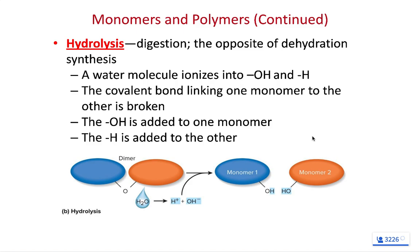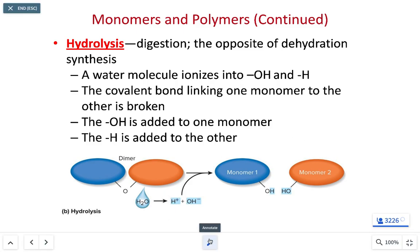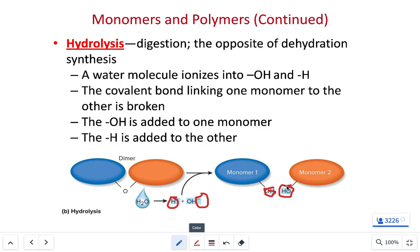We need to take big, complicated molecules and chemically chop them up into little tiny pieces so we can absorb them. Water has one hydrogen and one hydroxide — H₂O. We take one hydrogen from water and add it to one monomer, take the hydroxide and add it to the other monomer, and cleave apart that covalent bond. This is one of the reasons why we need to drink lots of water with meals, particularly complex carbohydrates.